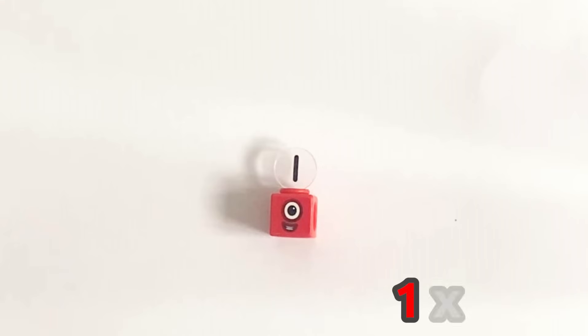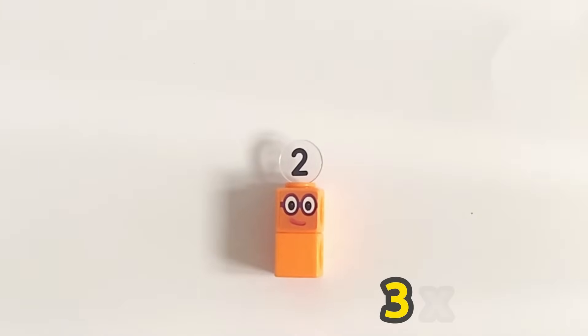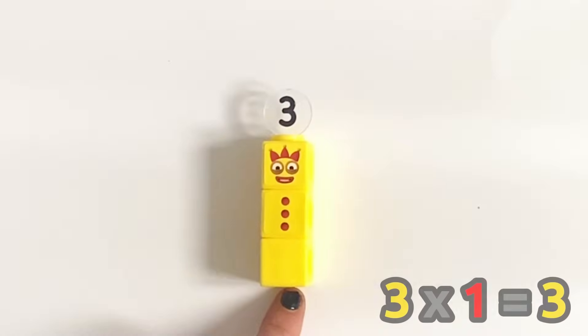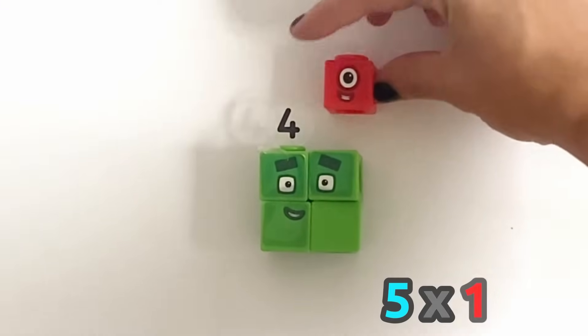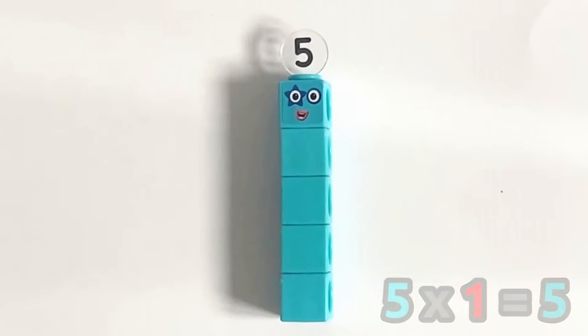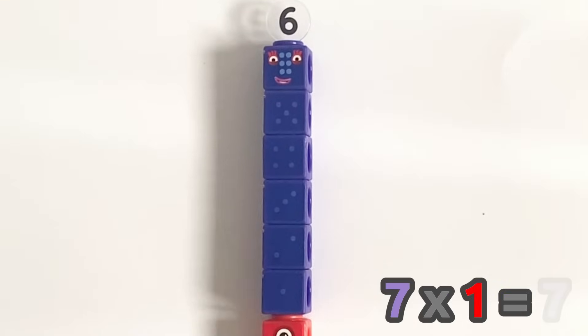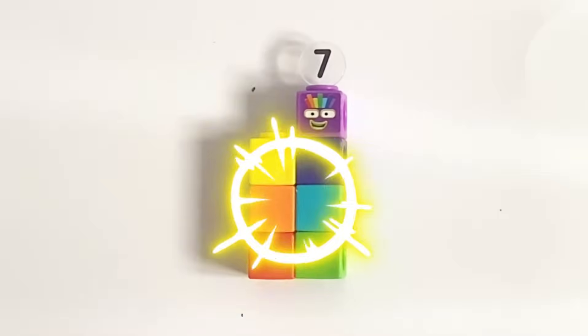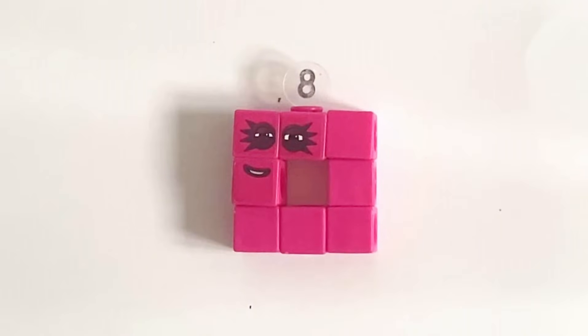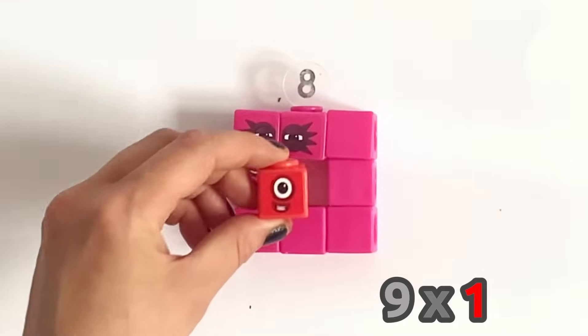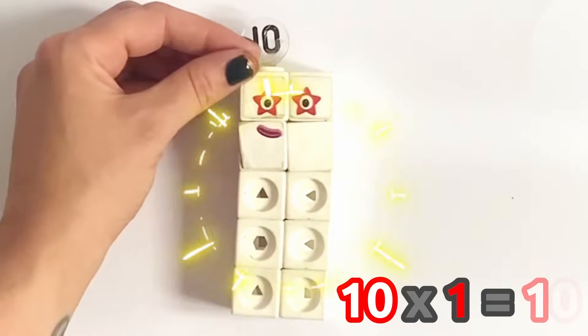So here is 1. 1 times 1 is 1. Then 2 times 1 is 2. 3 times 1 is 3. 4 times 1 equals 4. 5 times 1 equals 5. High 5! 6 times 1 equals 6. 7 times 1 equals 7. 8 times 1 equals 8. 8 can be a square with a hole. And 9 times 1 equals 9. And lastly, 10 lots of 1's are 10.